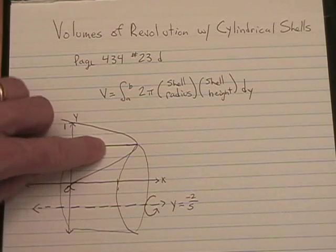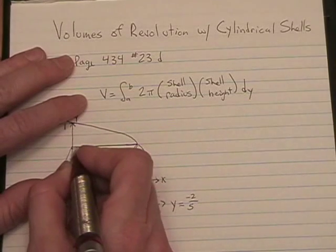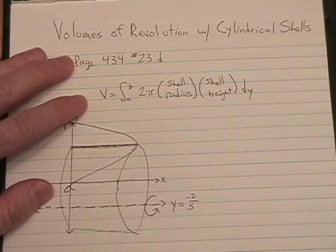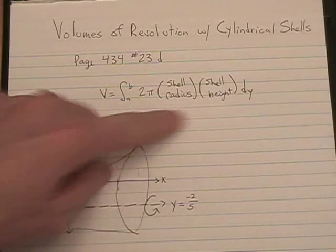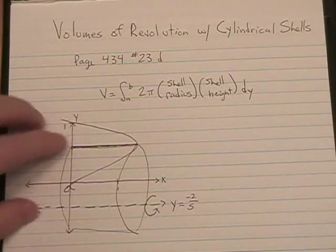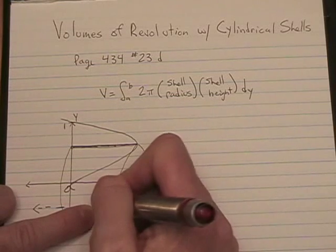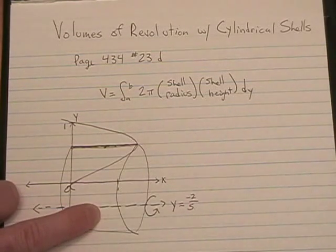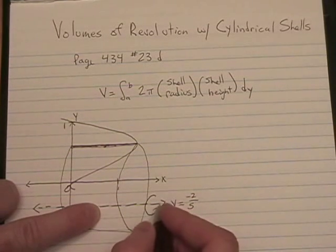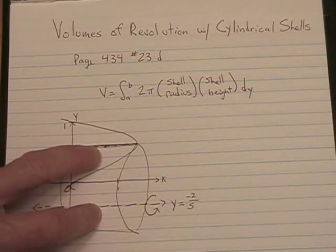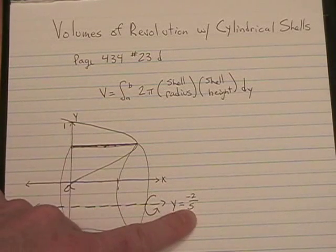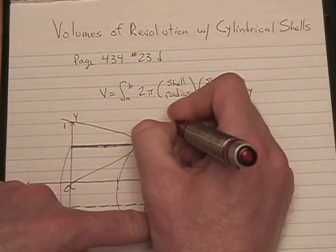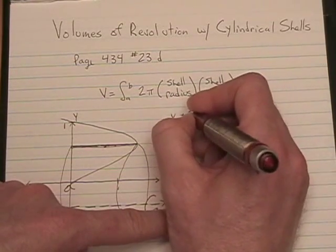This little slice will give us the shell radius and the shell height. To get the shell radius, we need to measure the distance from the axis of revolution out to our line. And the way you do that is simple. You do y minus whatever the line is. In our case, it's negative 2 fifths. So, our shell radius is y minus negative 2 fifths, which is y plus 2 fifths.